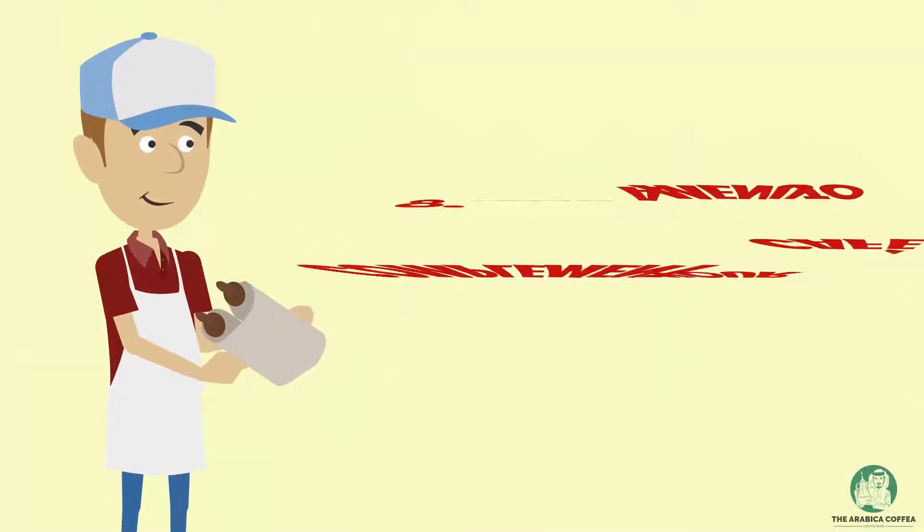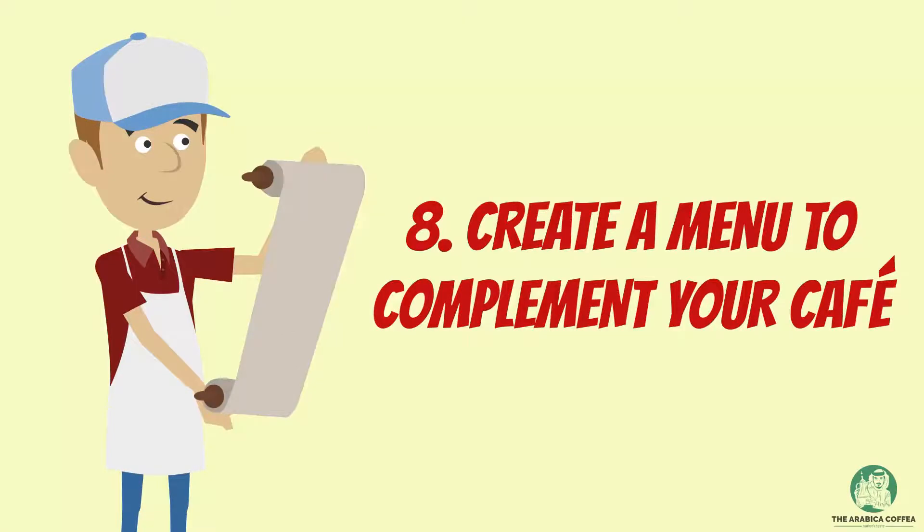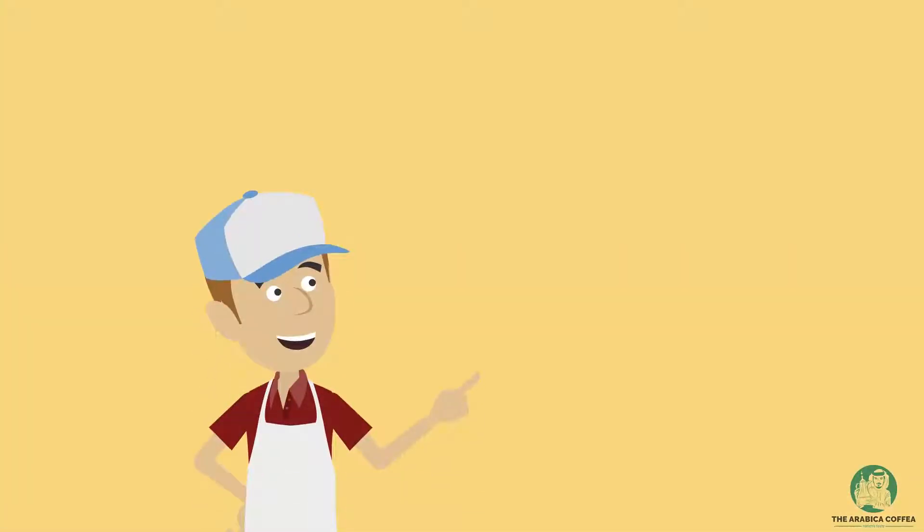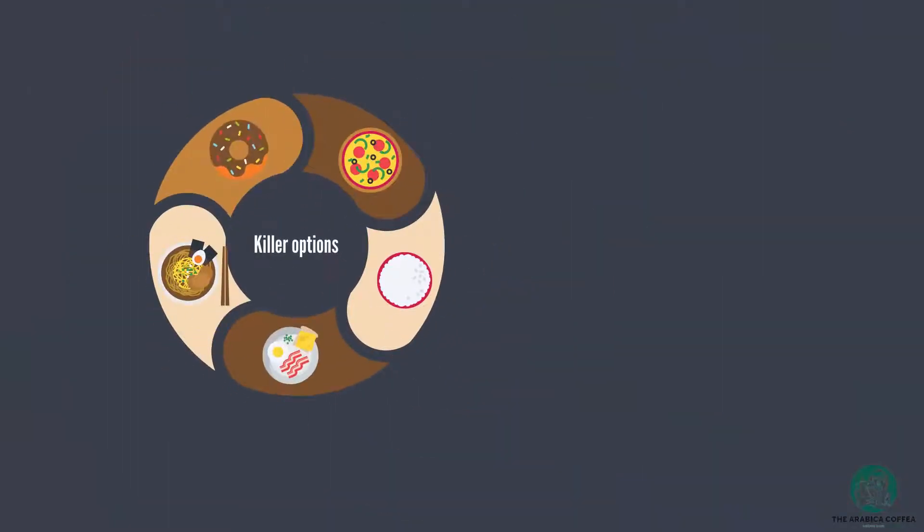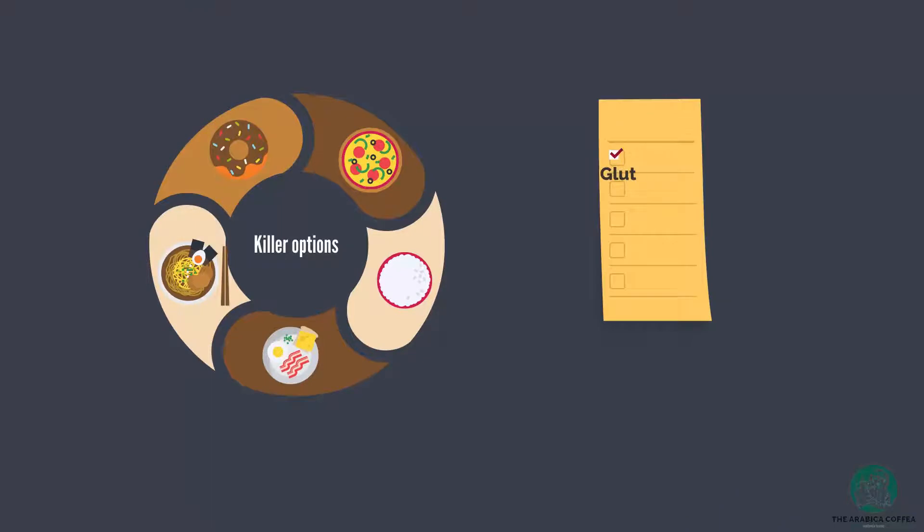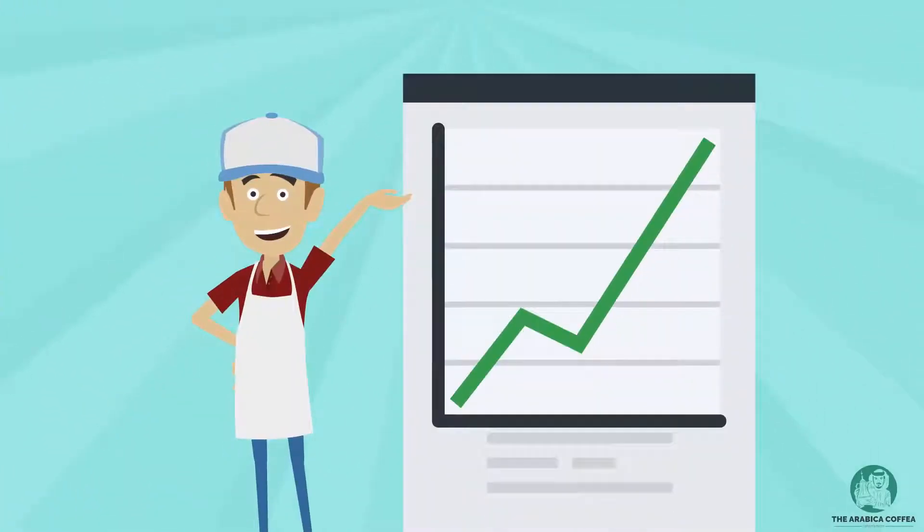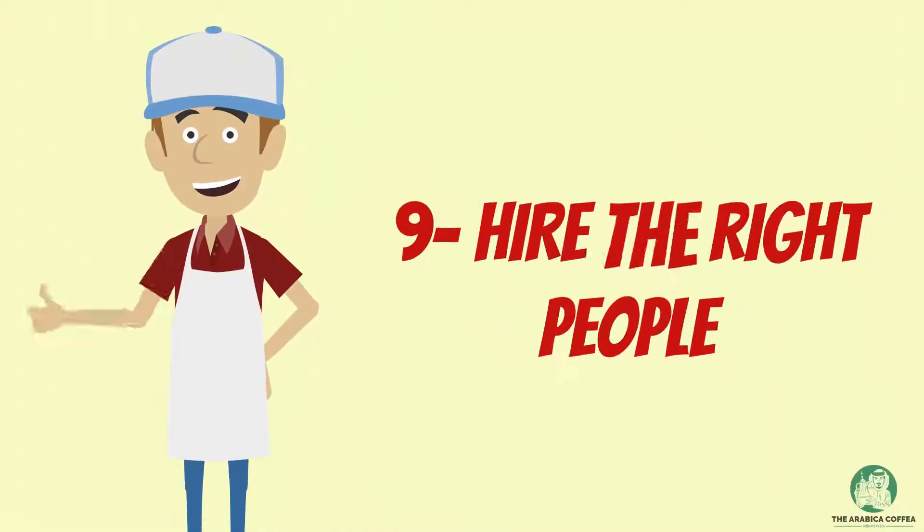Number eight: Create a menu to complement your cafe. Your menu should express your vision and the theme of your cafe. Focus on no more than 10 to 12 killer options, making sure to include gluten-free, vegan, and vegetarian options. Your menu also needs to be profitable.